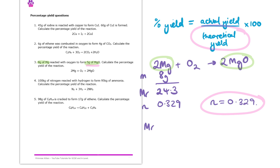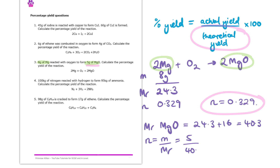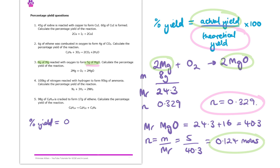First up, let's work out the MR of MgO: 24.3 plus 16, which is 40.3. To get the moles, we do the mass over the MR — that is 5 over 40.3 — which gives me 0.124 moles actually made of magnesium oxide. So putting these numbers into our formula: percentage yield equals 0.124 divided by 0.329, times by 100. We end up getting a percentage yield of 37.7% to one decimal place.